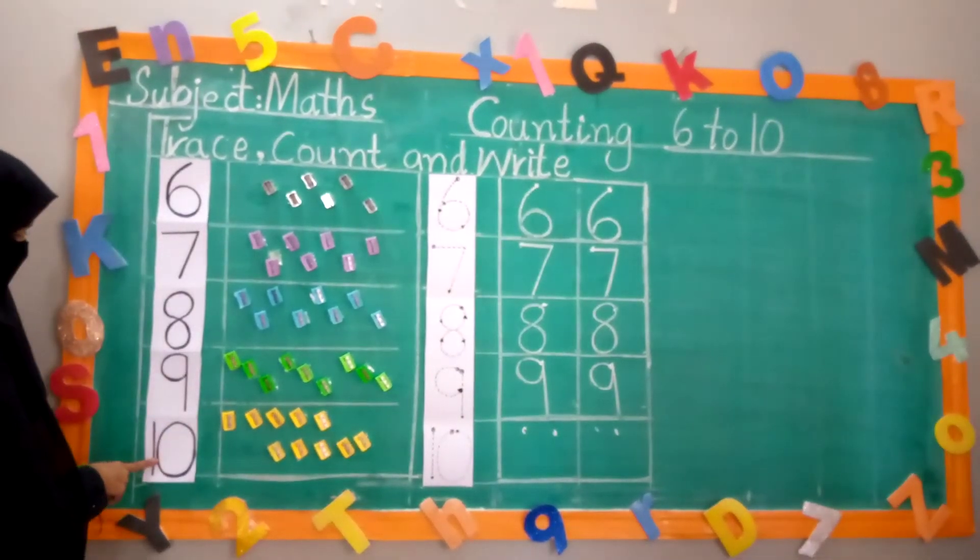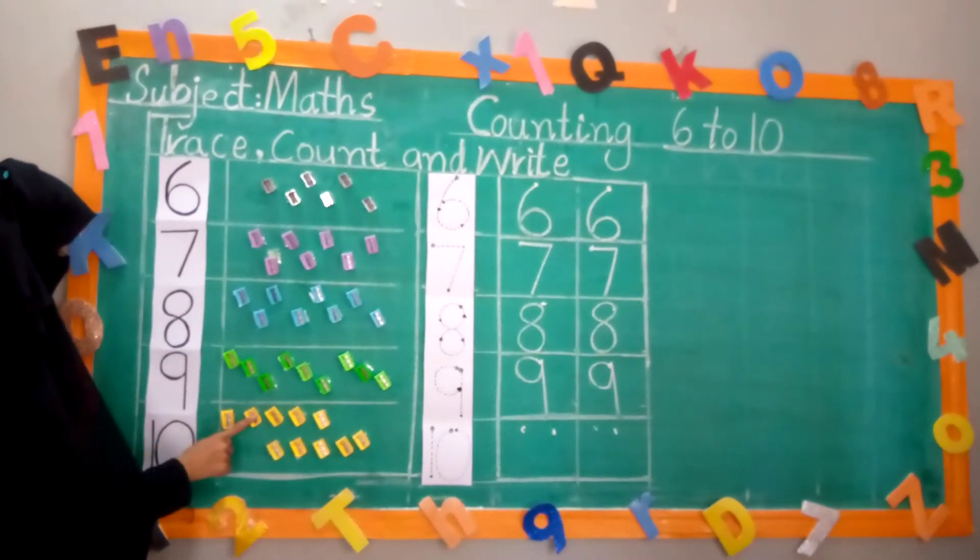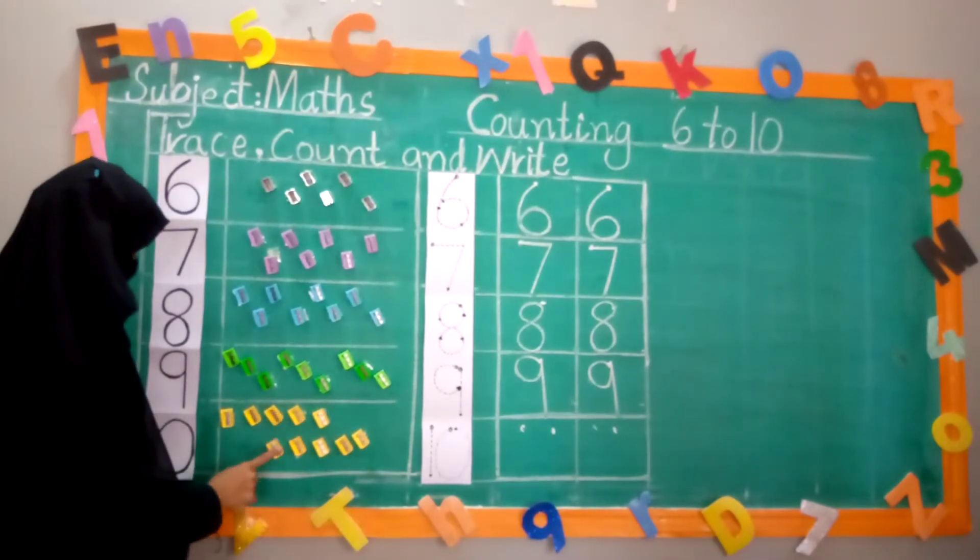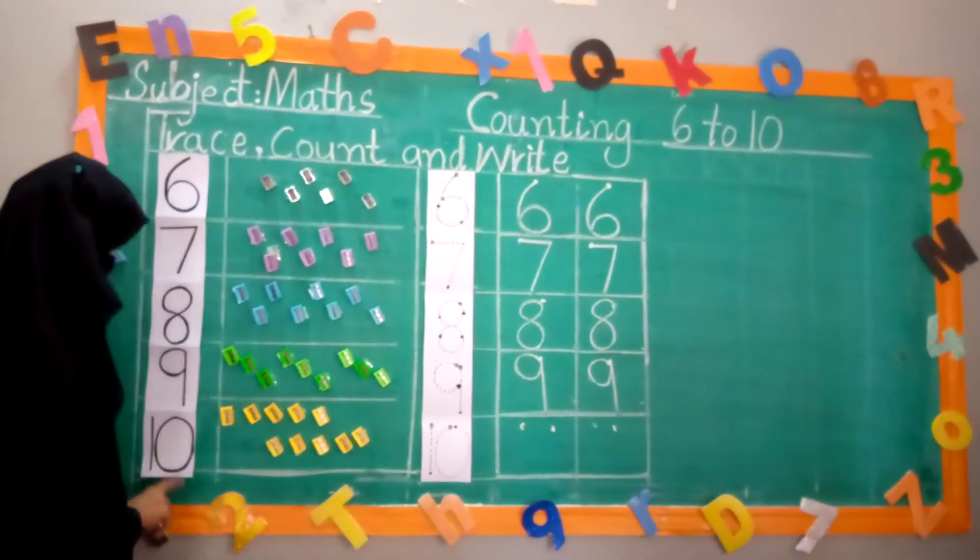10. How many sharpeners are here? Count with me. 1, 2, 3, 4, 5, 6, 7, 8, 9, 10. Ten sharpeners.